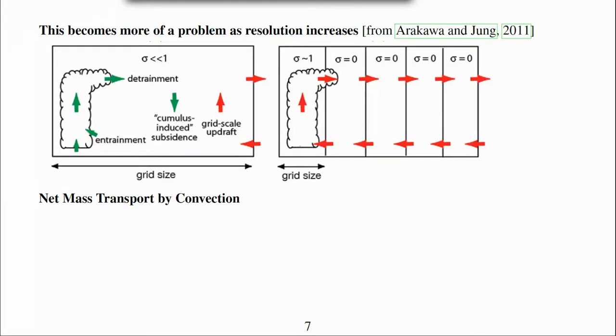As resolution increases the assumption that compensating descent is in the same column becomes worse. This is a diagram from Arakawa and Jung which highlights this problem. This problem has motivated a number of groups to include net mass transport by convection.